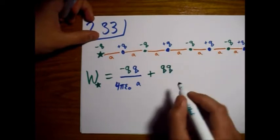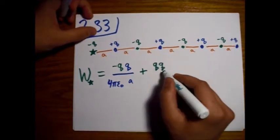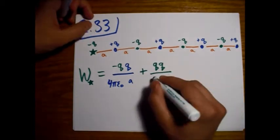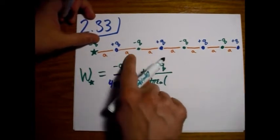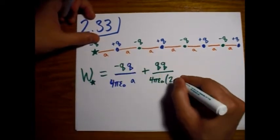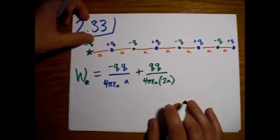I'll go ahead and keep writing the q's, both of them, instead of just writing q squared for now. Alright, 4πε₀, but the distance here is 2a instead.